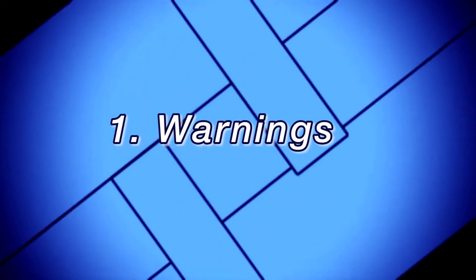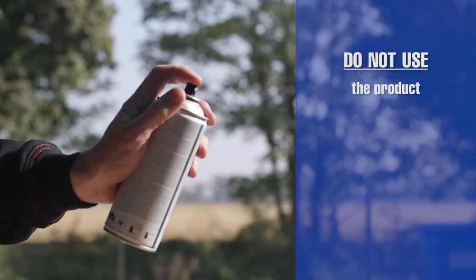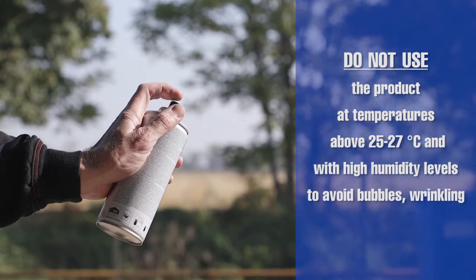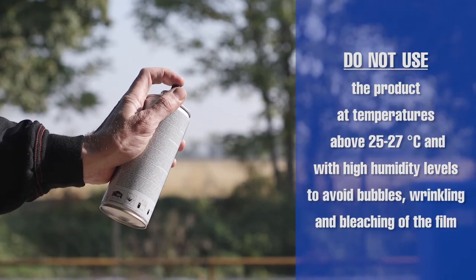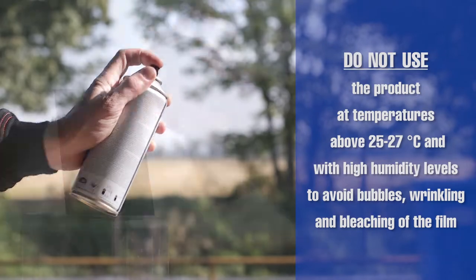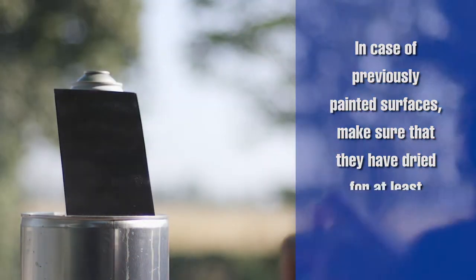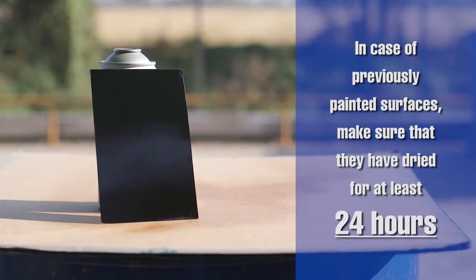Warnings! Do not use the product at temperatures above 25 or 27 Celsius degrees and with high humidity levels to avoid bubbles, wrinkling and bleaching of the film. In case of previously painted surfaces, make sure that they have dried for at least 24 hours.